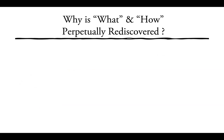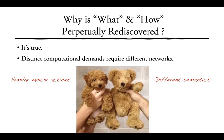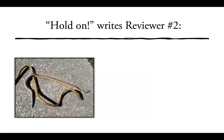Why is it that 'what' and 'how' are perpetually rediscovered? The most reasonable hypothesis is simply that it's true — that this is how the system is organized. A more principled explanation is that the distinct computational demands of recognizing what something is versus interacting with it motorically require different networks. Two objects may be interacted with using similar motor actions, but clearly involve very different semantics.